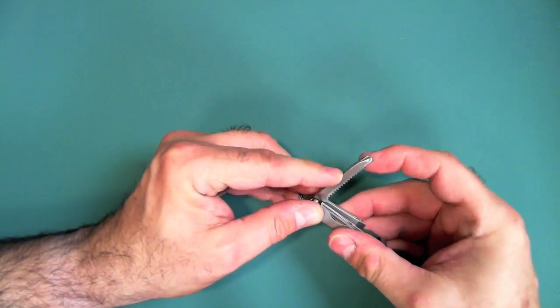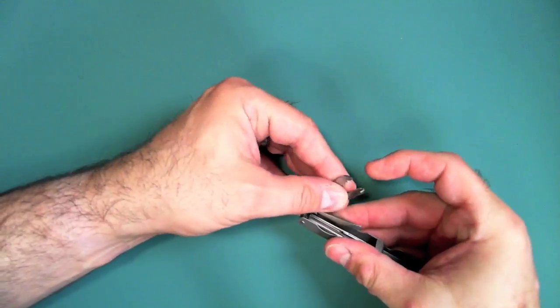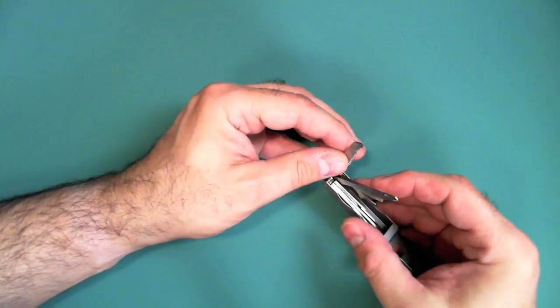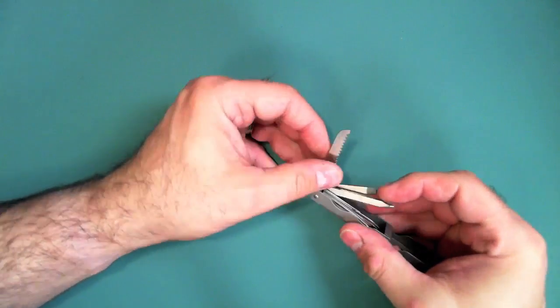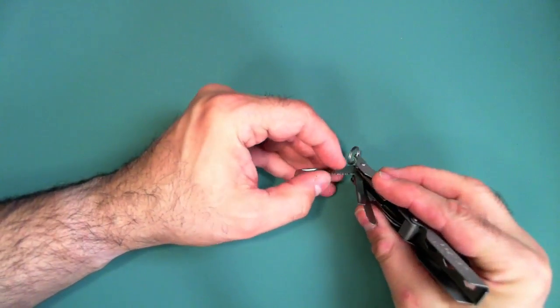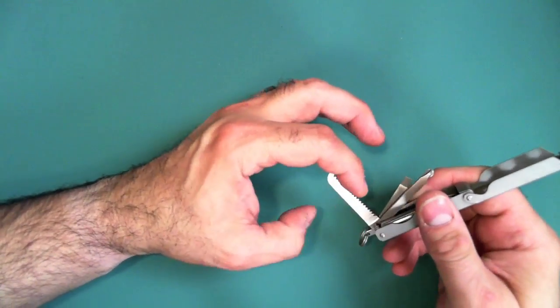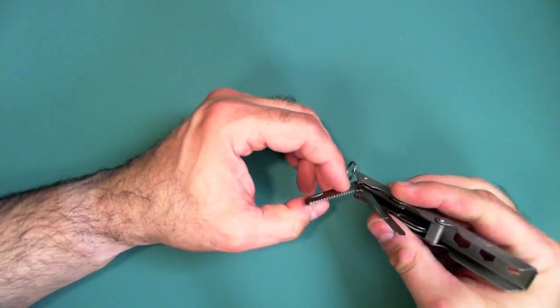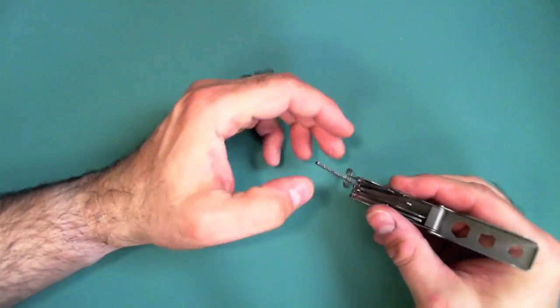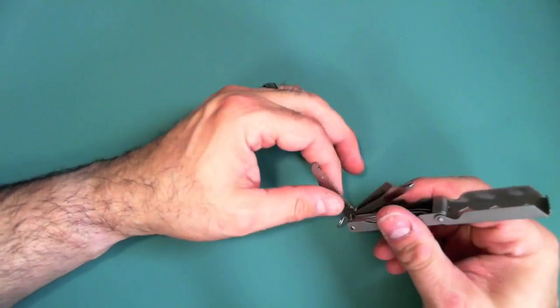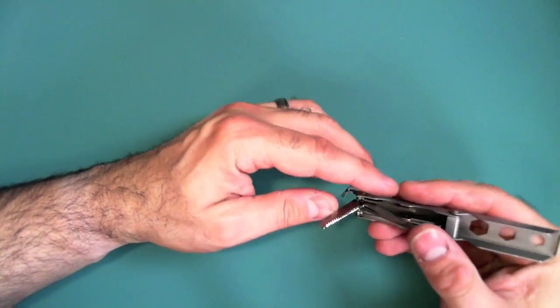And, what else do we have? We have a saw right there. And actually, this is a pretty good saw. I mean, you're not going to saw like trees down, but for little twigs. But the teeth and the way that they're cut are actually what you see on the really good saws on the multi-tool. So, I'm pretty impressed.